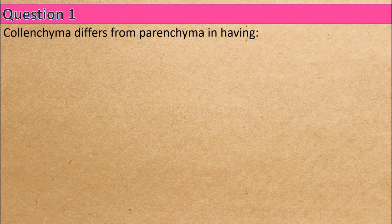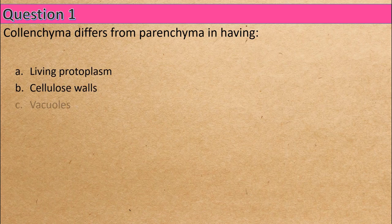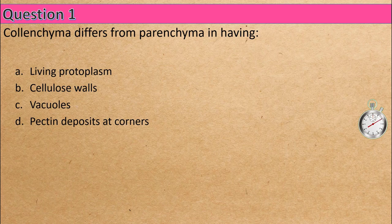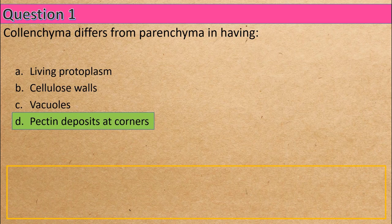Question 1: Collenchyma differs from parenchyma in having — Option A: living protoplasm, Option B: cellulose walls, Option C: vacuoles, Option D: pectin deposits at corners. The correct answer is Option D: pectin deposits at corners.